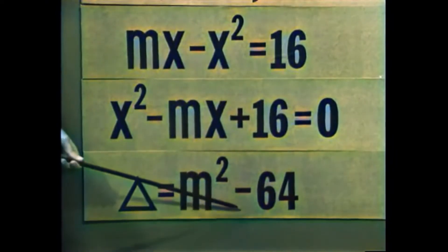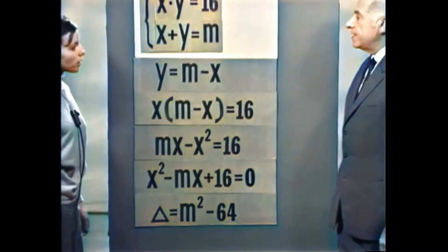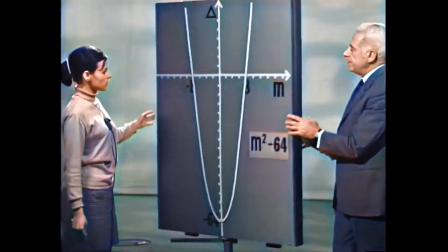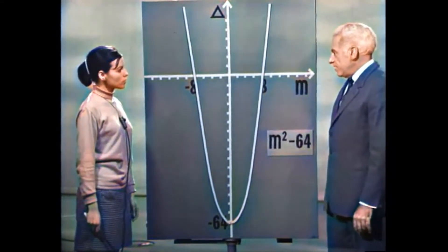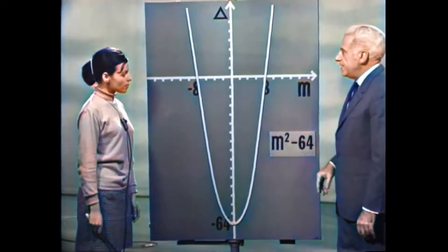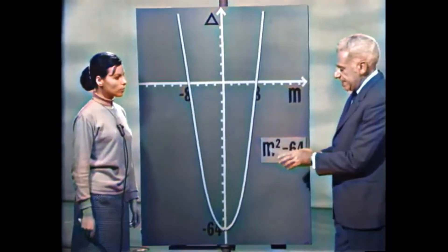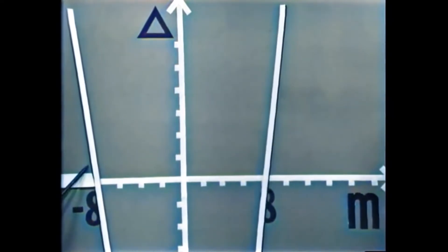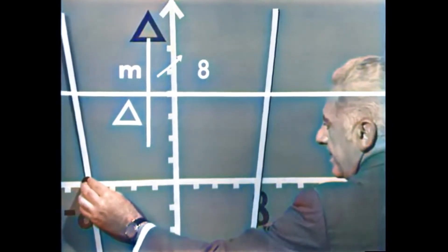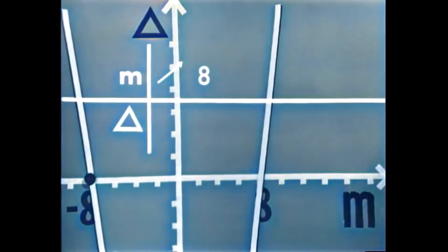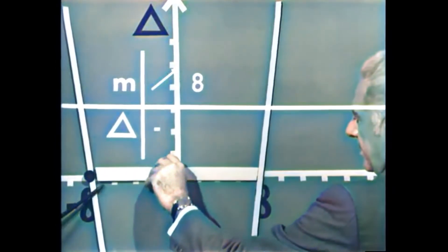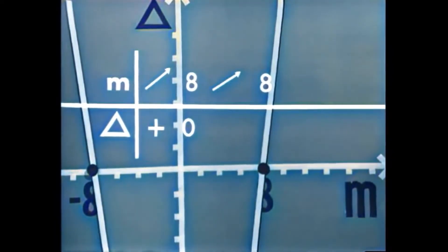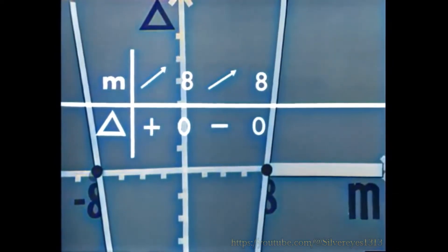הדיסקרימיננטה היא פרבולה M בריבוע שהוזזה 64 יחידות כלפי מטה. היא חותכת את הציר האופקי ב-פלוס 8 ומינוס 8. כאשר M קטן ממינוס 8 או גדול מ-8 — חיובית. כאשר M שווה ל-8 או מינוס 8 — אפס. כאשר M בין מינוס 8 ל-8 — שלילית.